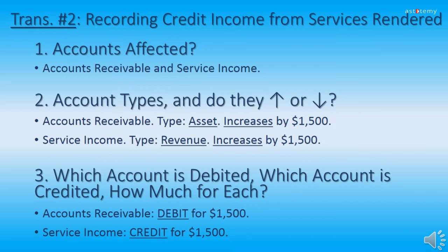Going through the first three steps of recording Transaction 2. Step 1: the two accounts affected are Accounts Receivable and Service Income. Step 2: Accounts Receivable is an asset type — it increases by $1,500. Service Income is a revenue type — it also increases by $1,500. Step 3: Accounts Receivable has a normal debit balance, so it will be debited for $1,500. Service Income has a normal credit balance, so it will be credited for $1,500.